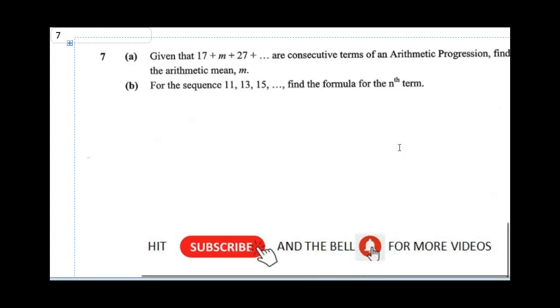Given that 17 plus M plus 27 are consecutive terms of an AP, find the arithmetic mean. For 17 plus M plus 27, for our AP, our first term is 17. Now, our common difference is going to be M minus 17.